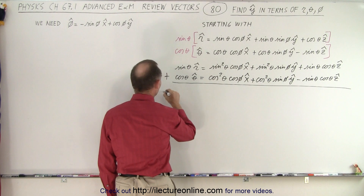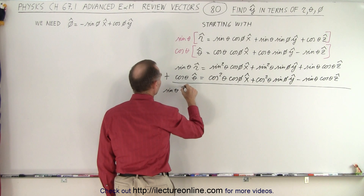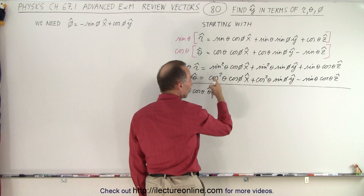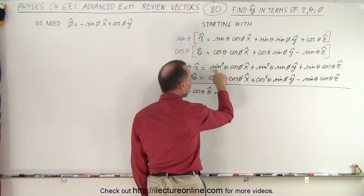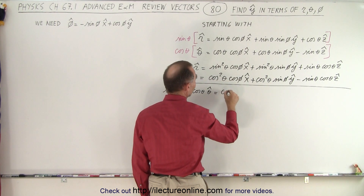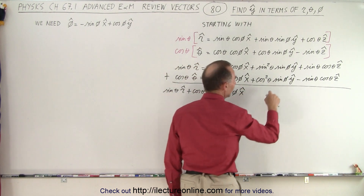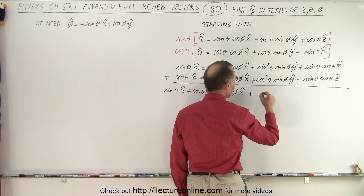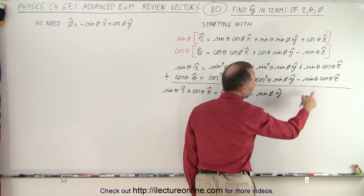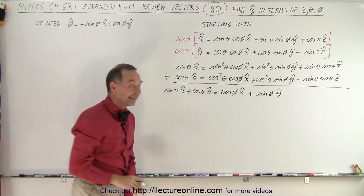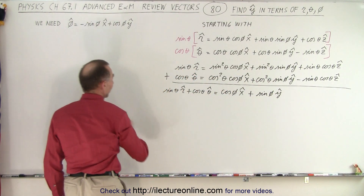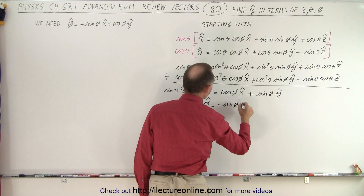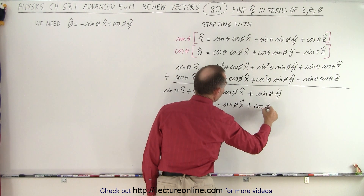On the left side, we end up with sine of theta r-unit vector plus cosine of theta theta-unit vector. When we add the right-hand sides together, we factor out cosine of phi, and get cosine of phi times (sine squared of theta plus cosine squared of theta), which equals cosine of phi x-unit vector. Similarly, factoring out sine of phi gives us sine of phi y-unit vector, and the z-unit vector cancels out. We then employ the definition of the phi-unit vector: the phi-unit vector equals minus sine of phi x-unit vector plus cosine of phi y-unit vector.